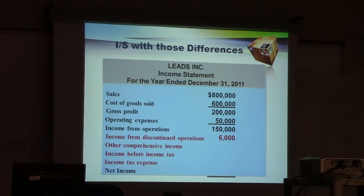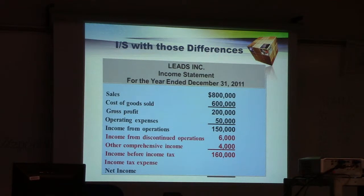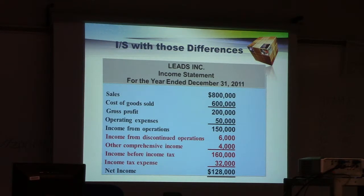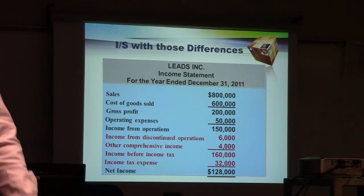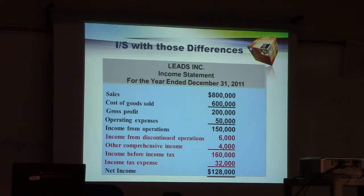Then you have income from discontinued operations, and we'll get into that in a couple of minutes. And then you have other comprehensive income. This makes income before tax $160,000, because you're simply adding income from operations and those two incomes together. Then you have income tax expense, and the net income is $128,000. The income tax expense percentage is not exact — it's just there to show how a corporation's income statement looks different from a proprietorship's.